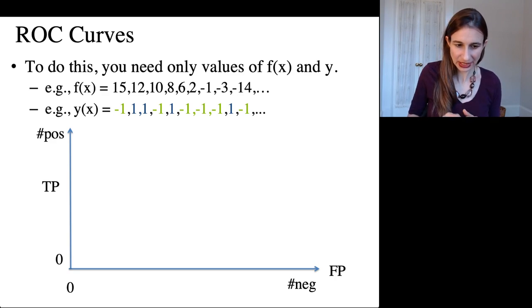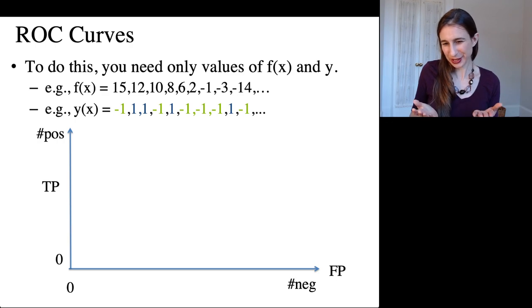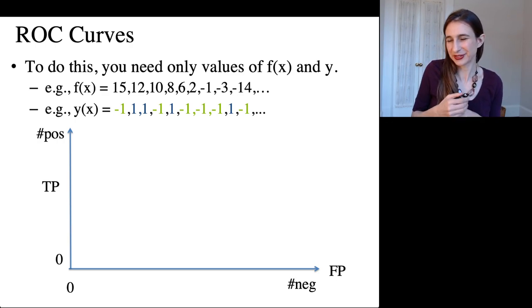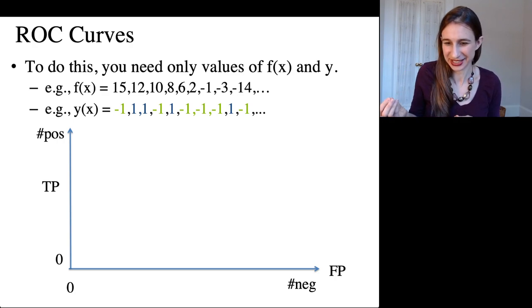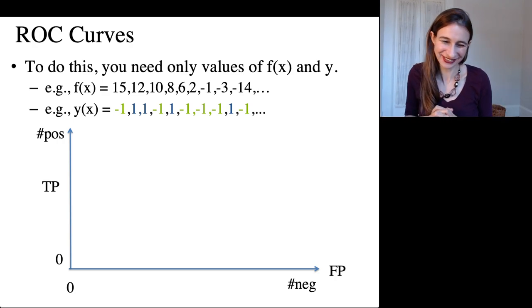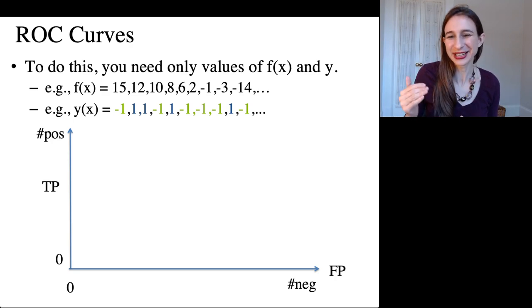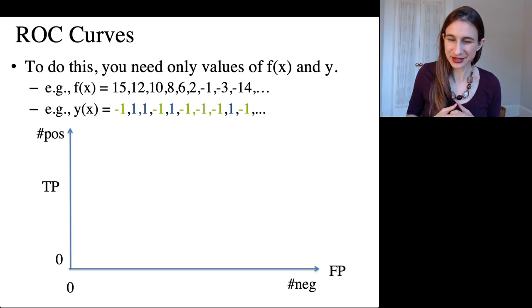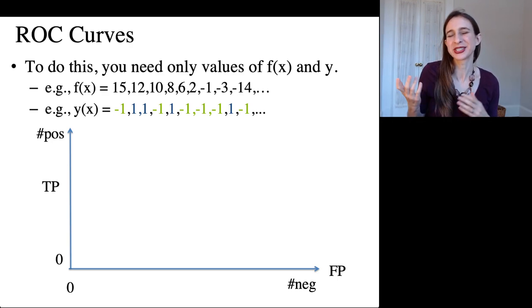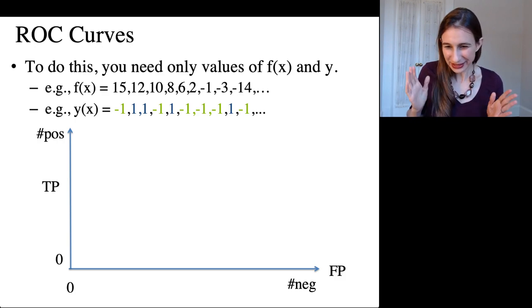In this case, we had a particular observation where its true label is minus one, but it was predicted to have value, its f(x) value is 15. Oh, that's quite bad. Our highest ranking observation is actually a negative one. So that's the point we were the most confident that it was positive. It's actually negative. Well, that happens sometimes.